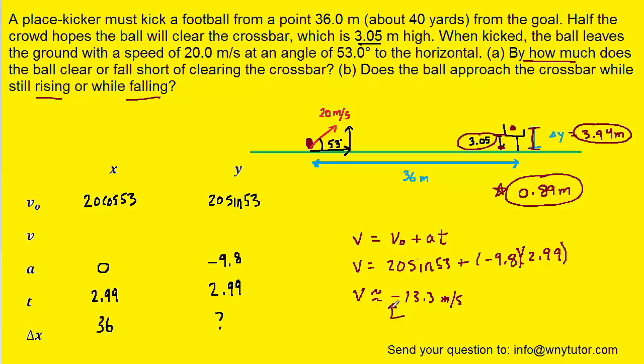The most important thing to note is that it is indeed negative. And when we have a negative final velocity in the y direction, that means the ball is falling as it approaches the crossbar. So the correct answer to part B will be falling.